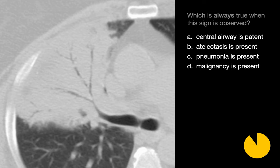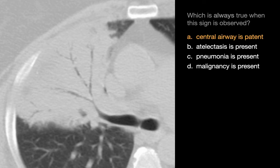What's always true when air bronchograms are observed? While air bronchograms can sometimes be seen in the setting of atelectasis, sometimes in the setting of pneumonia, and sometimes in the setting of malignancy, what's always true is that the central airway is patent, so that air can actually enter the lung and produce the air bronchogram.